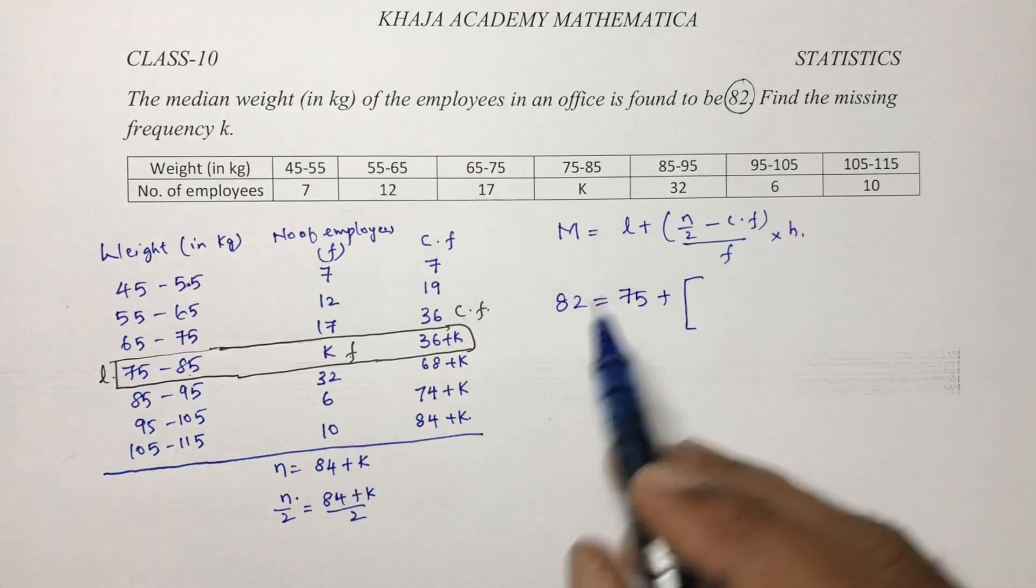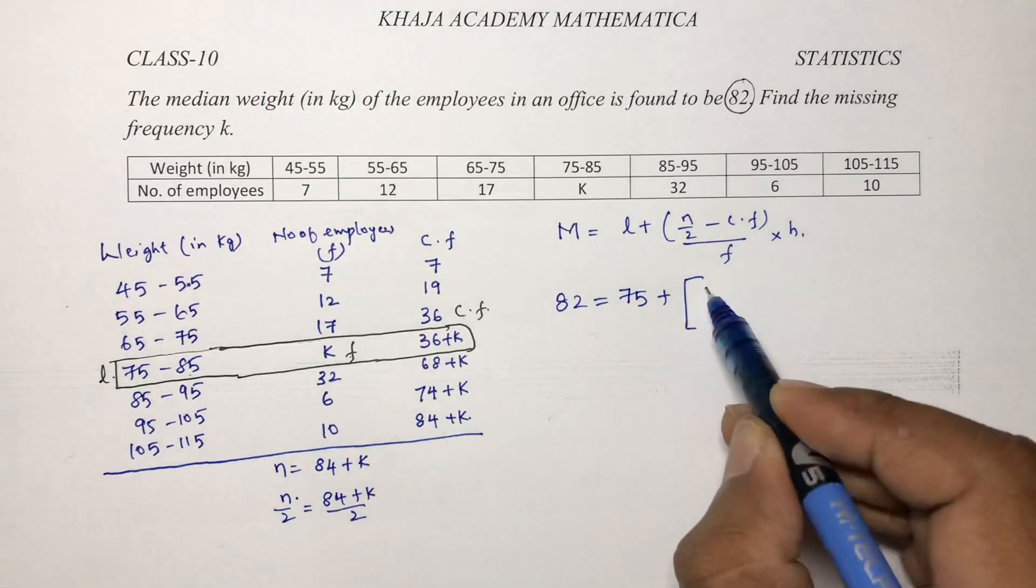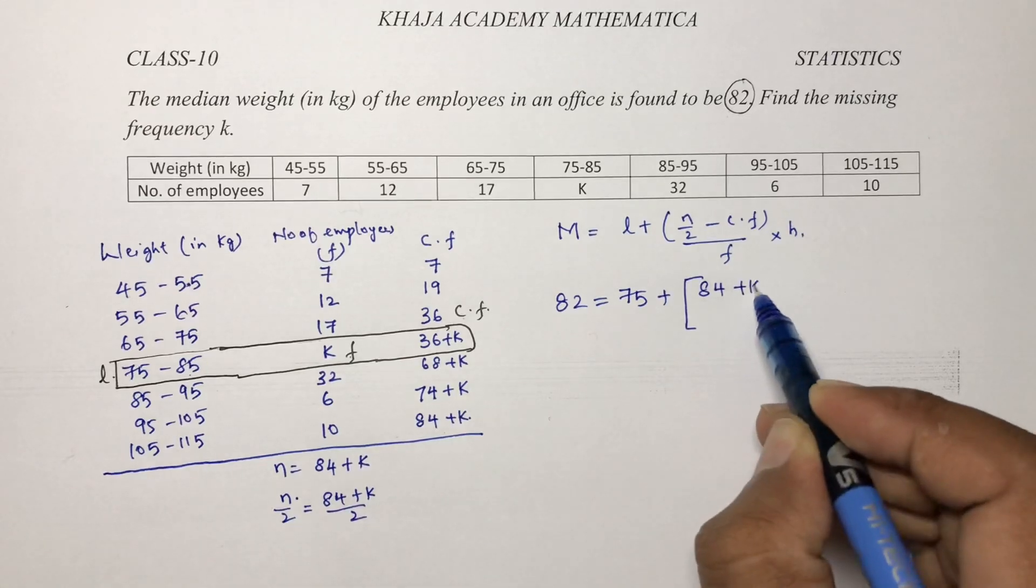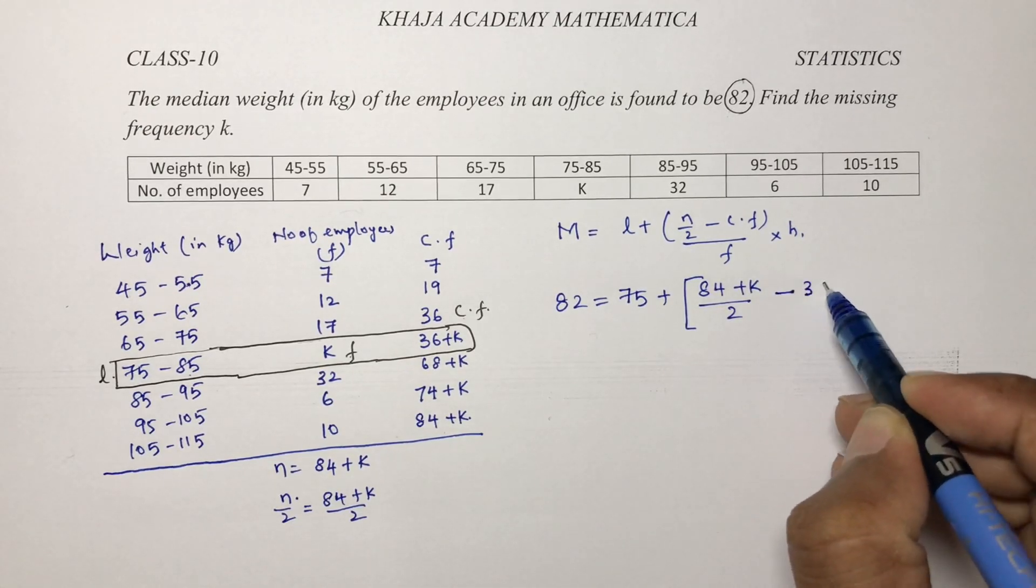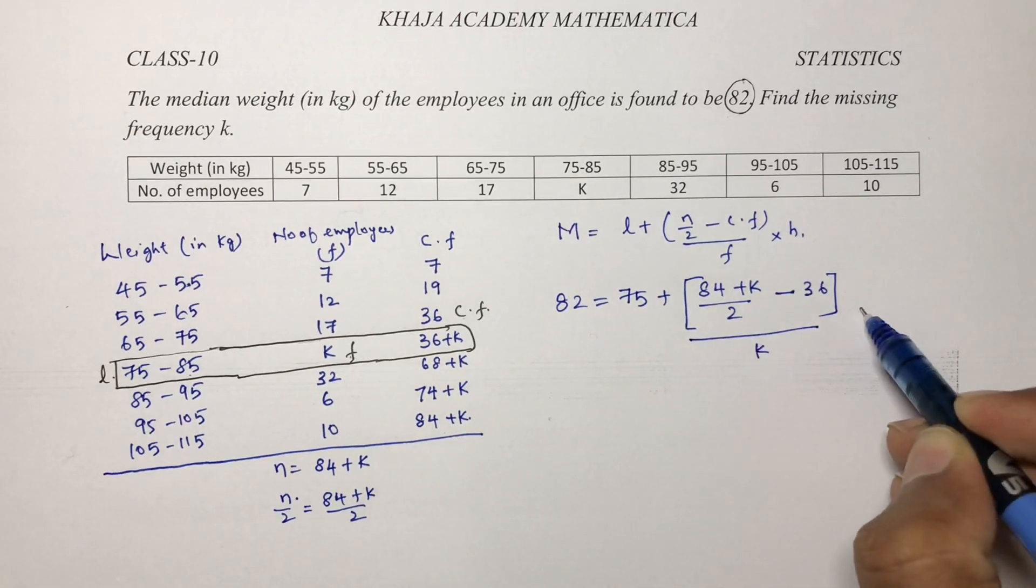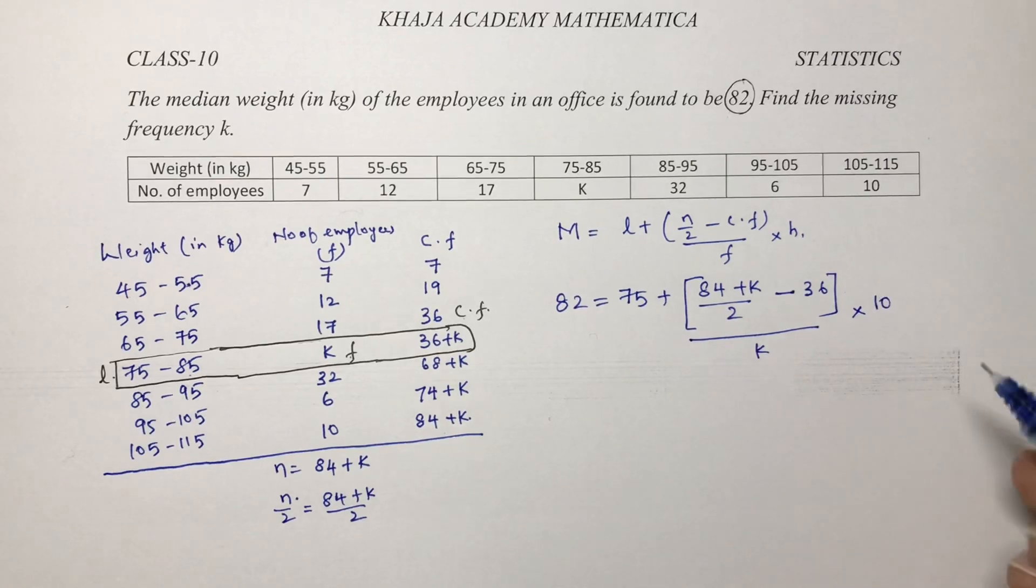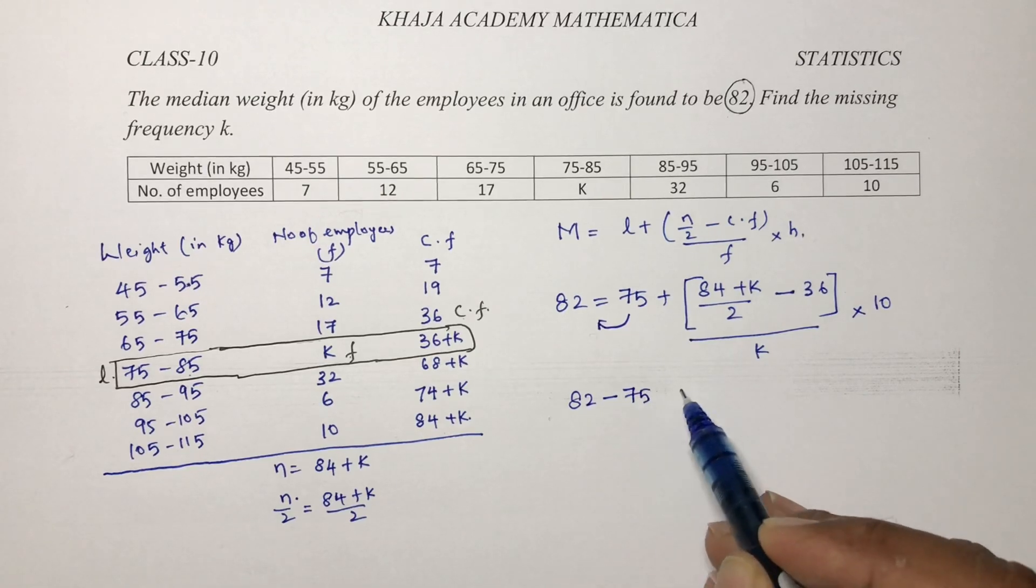n by 2, see total frequency is not given and one value is missing, so 84 plus k. n by 2 minus cf is 36 by small f is k into h is 10.